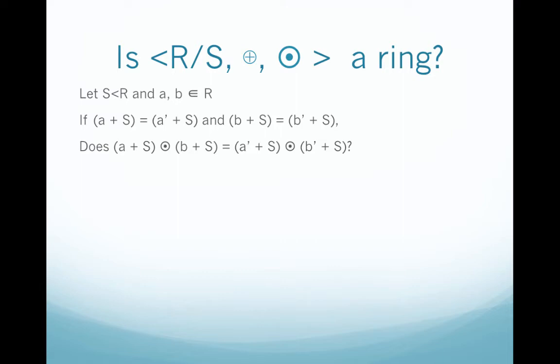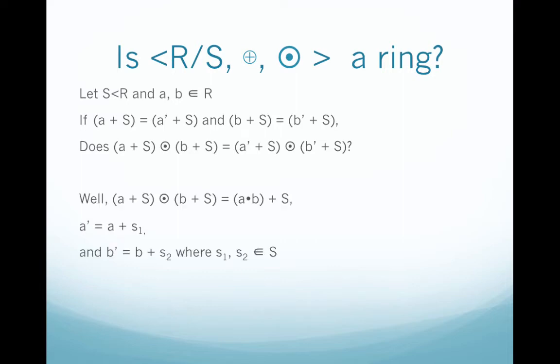Well-definedness means that if we take two representations of the same element and we multiply them, then they behave the same way. So we're going to let A + S = A' + S and B + S = B' + S. We can write (A + S)(B + S) = AB + S, which comes from our definition of multiplication. And since A and A' are in the same coset, we can write A' = A + s₁, and since B and B' are in the same coset, we can write B' = B + s₂, where s₁ and s₂ are some elements in S.